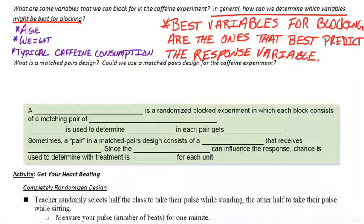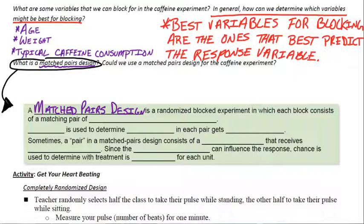All right, so the last part to these notes, we have a new vocab term here. And it's a part of blocking for experiments. It says, what is a matched pairs design here in italics? So I drew a little arrow here. We're going to start by the definition. So a matched pairs design. What is that?